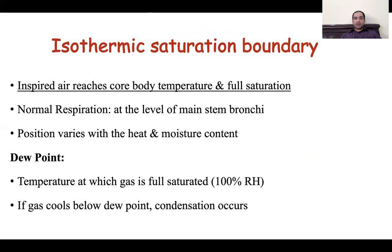Isothermic saturation boundary is the level at which the air reaches core body temperature and is fully saturated with water vapor. In normal breathing, it has been shown to be at the level of the mainstem bronchi, but the level varies depending on the disease, heat and moisture content of the inspiratory gas, and the type of breathing. Dew point is the temperature at which the inspiratory gas is fully saturated with water vapor — that is, it has 100% relative humidity. If we cool the gases below the dew point, they lose water vapor in the form of condensation.